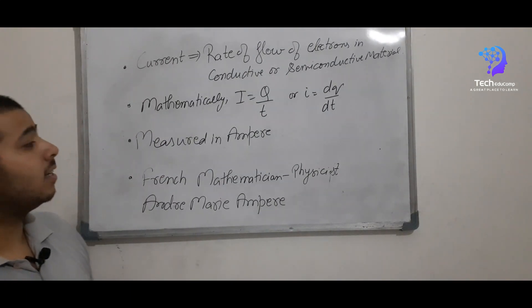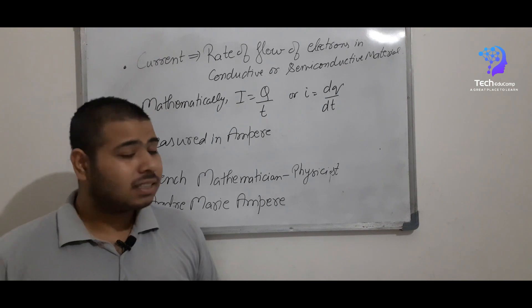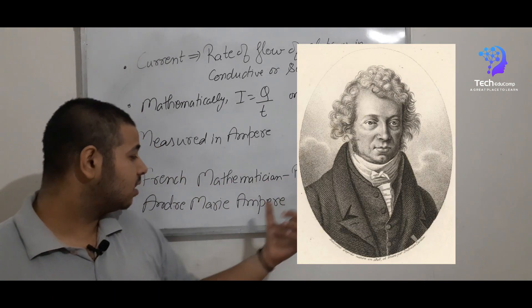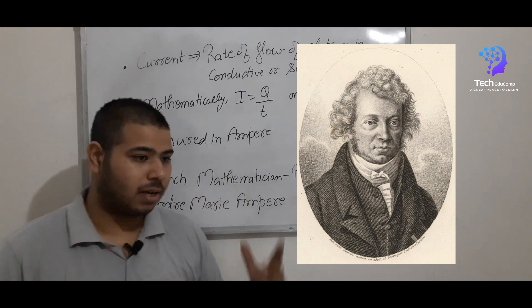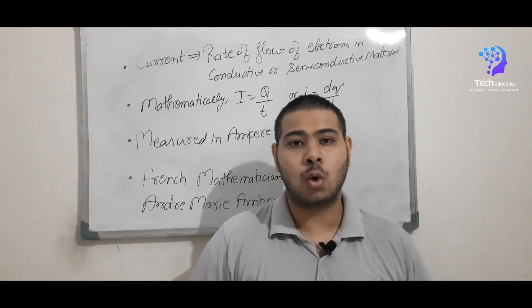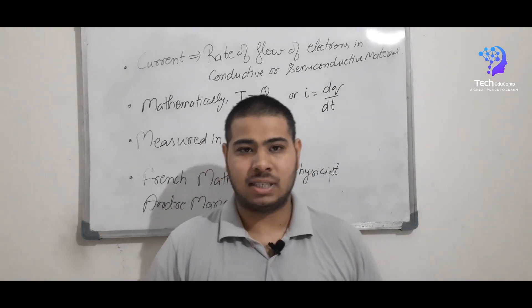And this current is measured in ampere. And this ampere came from the French mathematician physicist André-Marie-Ampere. So by this, we can say that 1 ampere is equal to 1 coulomb per second.